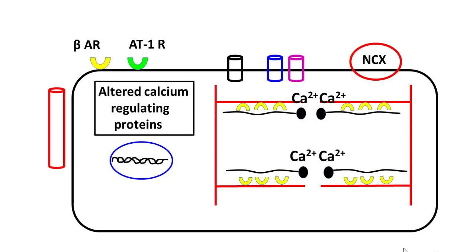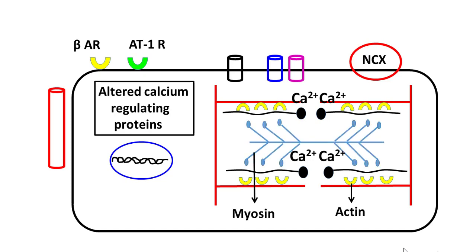The contractile proteins in the sarcomeres of the cardiac myocyte also get affected. Even though the number of sarcomeres increases in hypertrophy, these sarcomeres consist of a form of myosin of much lower strength and much lower efficiency compared to myosin in the non-hypertrophied heart. Therefore, in spite of a larger number of contractile proteins and a bigger cell size, the cell is weaker and less contractile than a non-hypertrophied cell. This is what we mean by pathological hypertrophy.